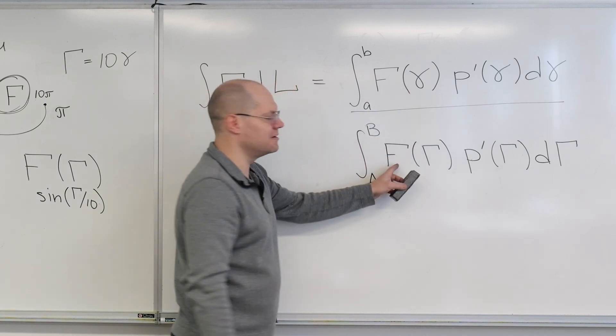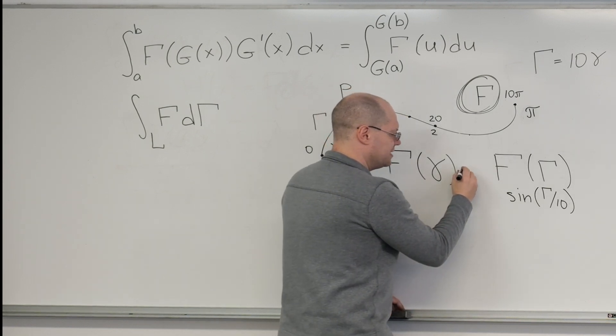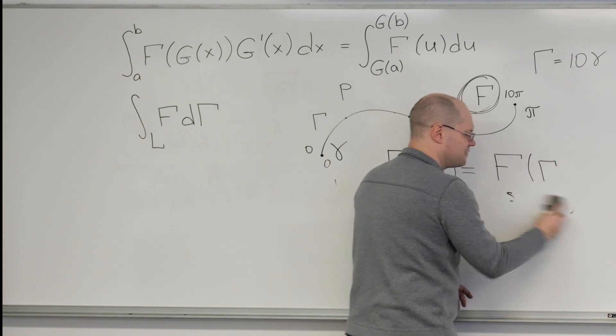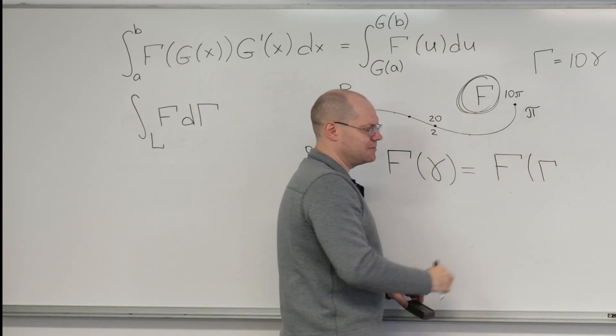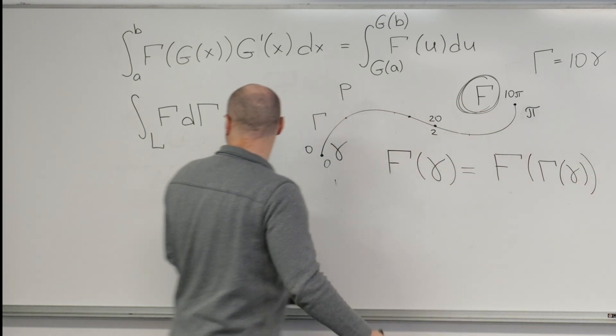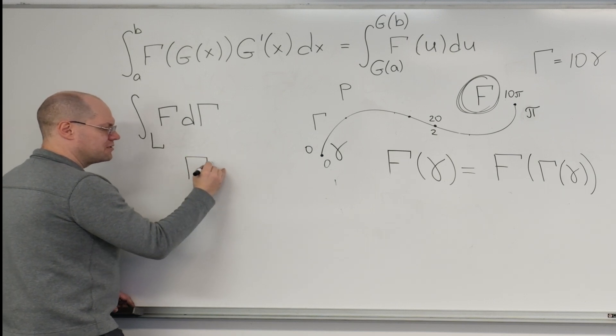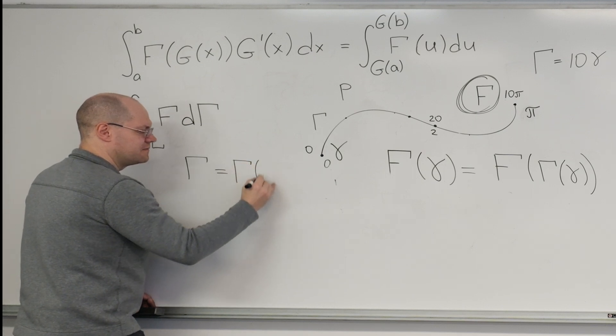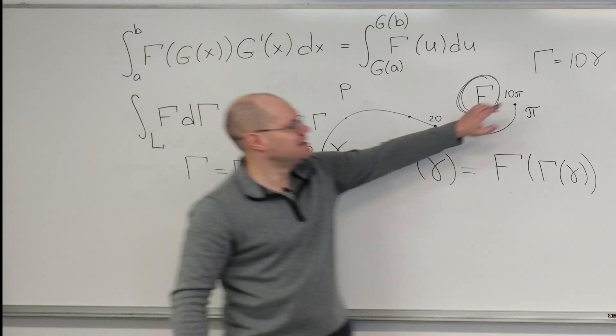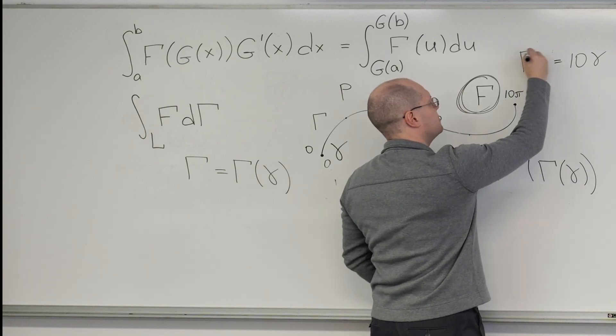Well, how is f of little gamma related to f of capital gamma? Well, that's straightforward. To get f of lowercase gamma, you just have to take f of capital gamma and plug in how capital gamma depends on lowercase gamma. That's the function that I had written here, where you get the parameter capital gamma by substituting how little gamma depends on capital gamma. That's this function right here in our particular example.